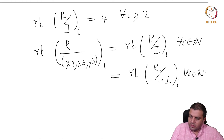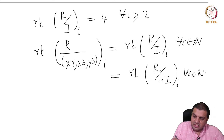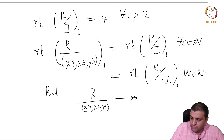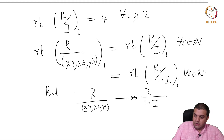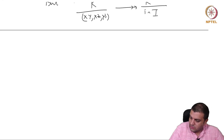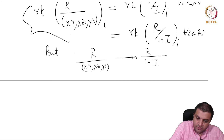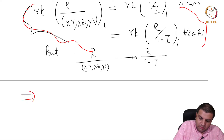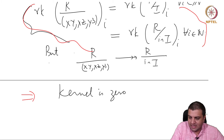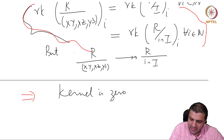Since the ideal (x*y, x*z, y cubed) is contained inside in(I), there is a surjection from R mod (x*y, x*z, y cubed) onto R mod in(I). But because their Hilbert functions are equal in every degree, the kernel must be zero in every degree. Therefore the kernel is 0, which means in(I) equals the ideal generated by x*y, x*z, and y cubed.